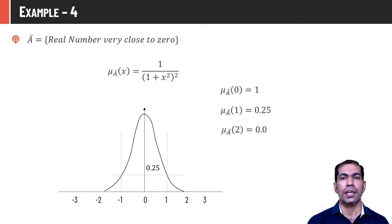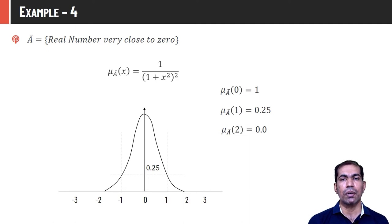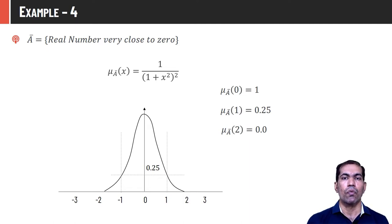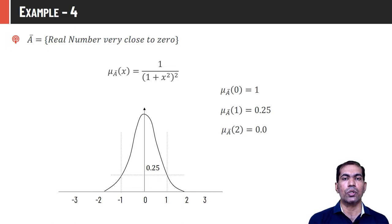Similarly, 'very very close to 0' can be modeled by μ_Ā(x) = 1/(1 + x²)⁴, and so on. To represent good students with CGPA above 5.0: the crisp set uses a harsh threshold — CGPA ≥ 5 is a good student, CGPA 4.99 is not. The fuzzy set is more natural: students with CGPA > 5 get membership 1, and as CGPA decreases below 5, membership value also decreases — the student is still considered somewhat good but with lower membership.